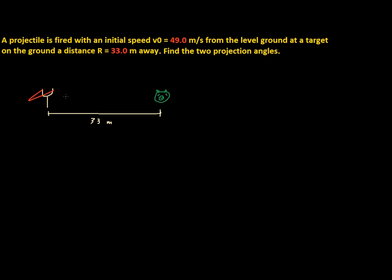There are two angles this can be done with. Angle number one is like a really narrow angle, and angle number two goes up high and comes down like that. Those are the two angles we want to find. We are given that the speed the angry bird leaves the slingshot is V₀ equals 49 meters per second.